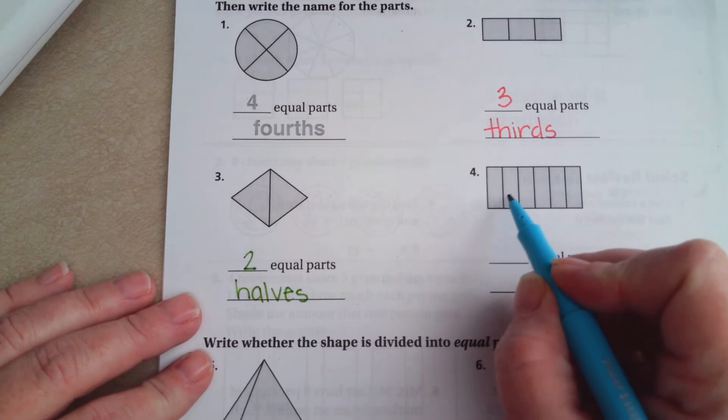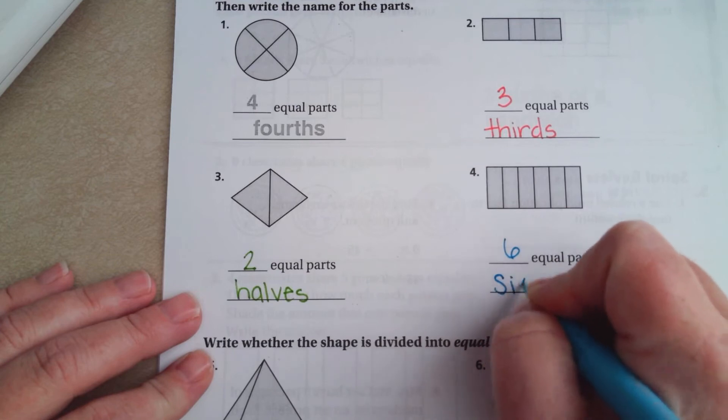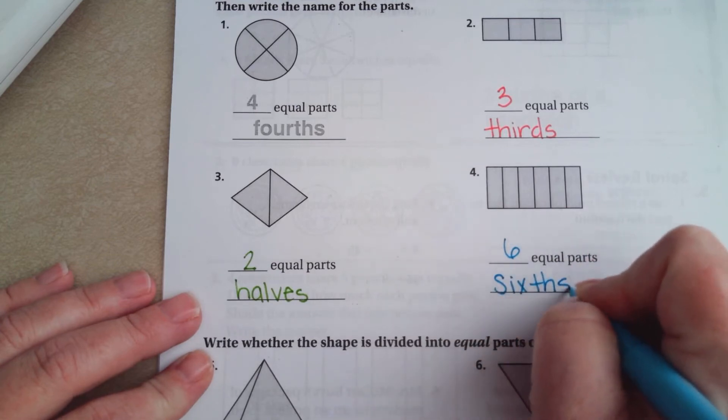When you have 1, 2, 3, 4, 5, 6 equal parts, those are called sixths.